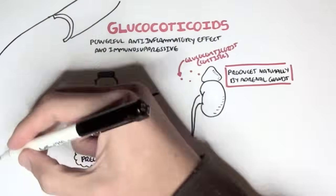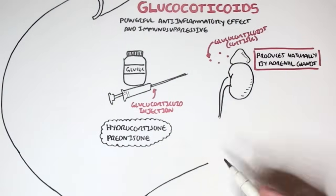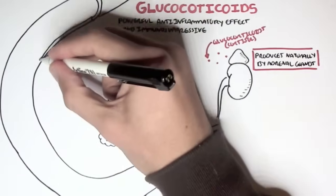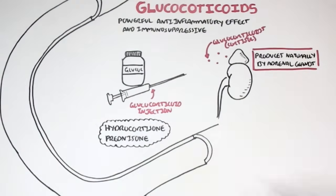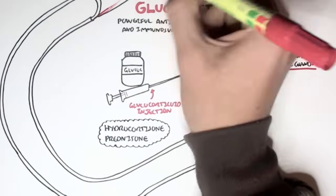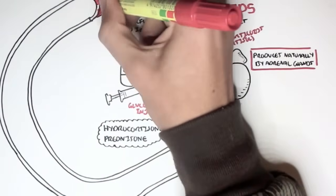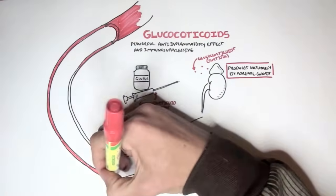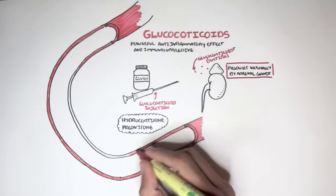Some examples of these are hydrocortisone and prednisone. You might know this because some, especially sports people, they use cortisone to relieve pain quickly for a duration of time. But of course, taking glucocorticoids like this for a long time has some very bad effects.